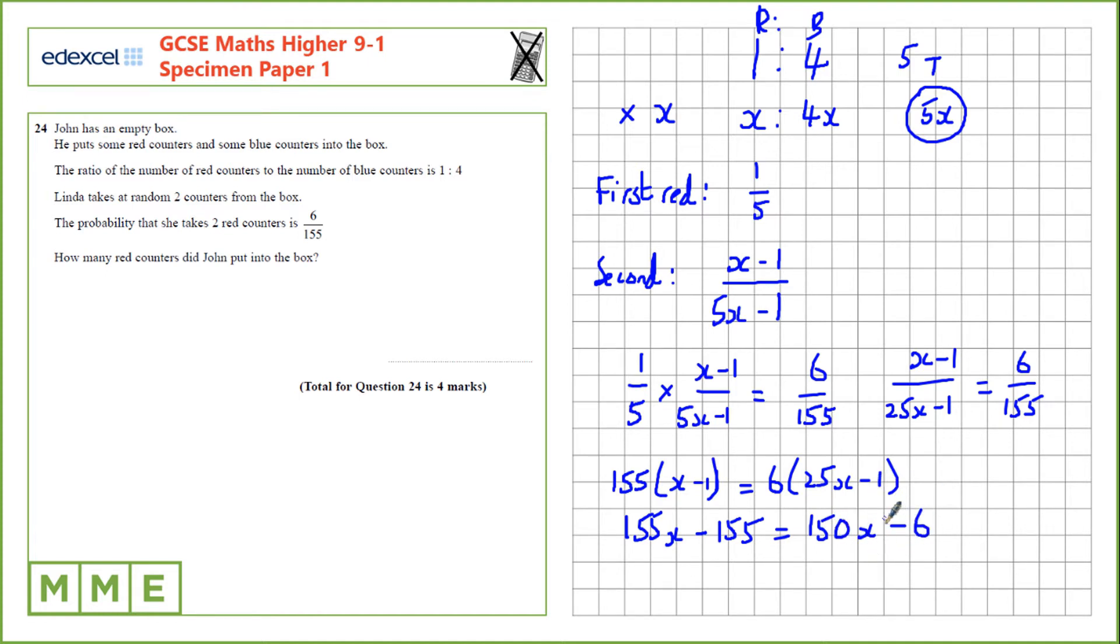Let's collect terms on both sides. So, 155x minus 150x, that's 5x. And minus 6, add 155.